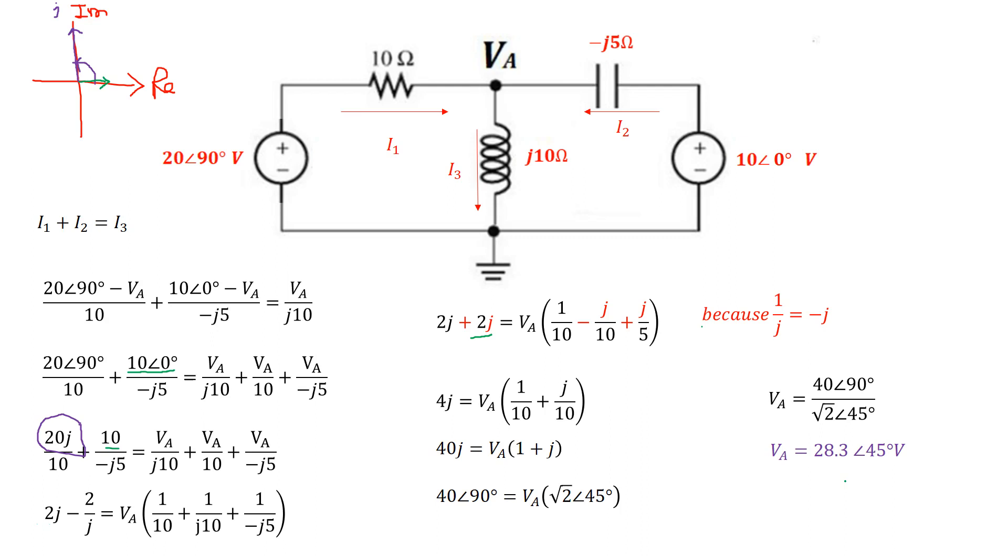Now if you wanted to convert this to the time domain, we just need to remember that our omega was 10. Omega was 10 radians per second. So we can write down that the magnitude 28.3 is 28.3 cosine 10t plus the phase angle that we just calculated here, which is 45 degrees. So VA of time t is 28.3 cosine 10t plus 45 degrees. So that's basically the voltage across the inductor or the voltage at node A for this particular problem.